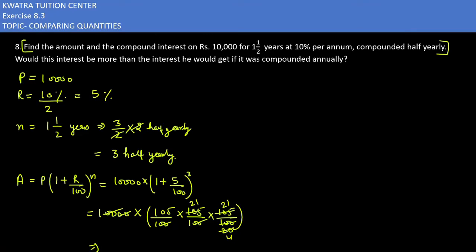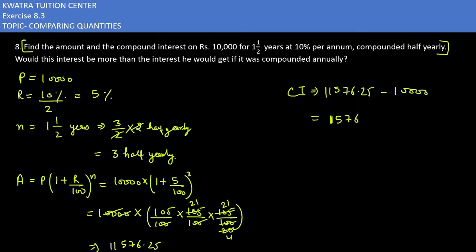So the numerator becomes 105 × 21 × 21 and the denominator is 4. Dividing gives the amount as rupees 11,576.25. The compound interest is 11,576.25 minus 10,000, which equals rupees 1,576.25. This is the compound interest when compounded half yearly.